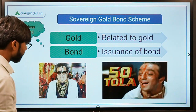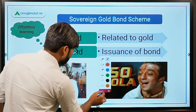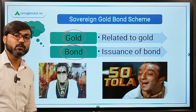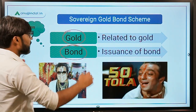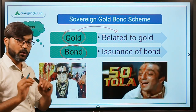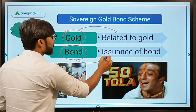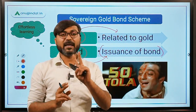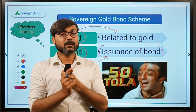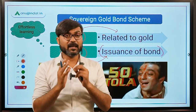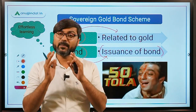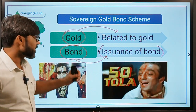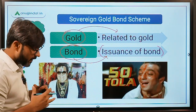Let's start with the objective of the scheme and try to simplify it. There are two words here: number one is gold and number two is bond. Gold means this scheme is related to gold, and bond — we all know what bonds are — means that bonds will be issued here. So there are two words: one is gold and one is bond.